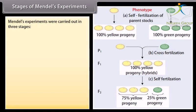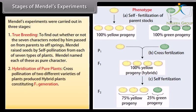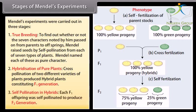Stages of Mendel's experiments. Mendel's experiments were carried out in three stages. First, true breeding: to find out whether the seven characters passed on from parents to offspring, Mendel raised seeds by self-pollination from each of seven plant types, naming each a pure character. Second, hybridization: cross-pollination of two different varieties produced hybrid plants constituting the F1 generation. Third, self-pollination in hybrids: each F1 offspring was self-pollinated to produce the F2 generation.